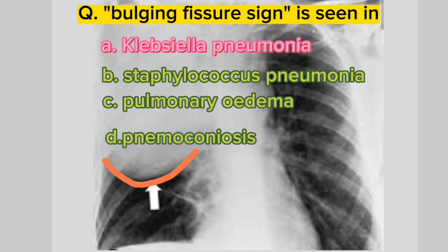The Bulging Fissure Sign refers to lobar consolidation where the affected portion of the lung is expanded, causing displacement of the adjacent fissure. Classically, it has been described in right upper lobe consolidation secondary to Klebsiella Pneumonia.